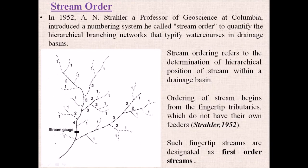Strahler, who was a professor at Columbia, introduced a numbering system called stream order to quantify the hierarchical branching networks of the drainage basin. Stream ordering refers to the determination of the hierarchical position of a stream within a drainage basin.